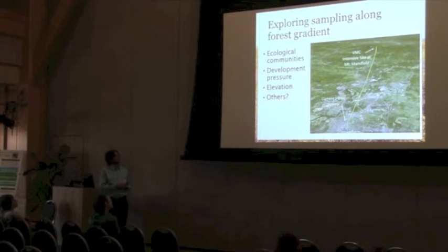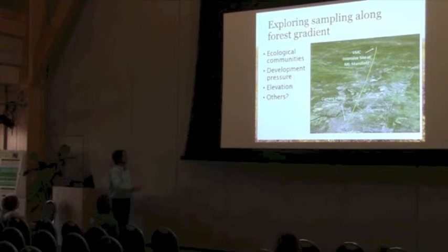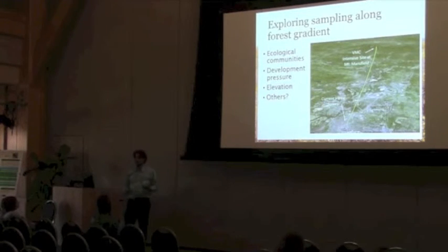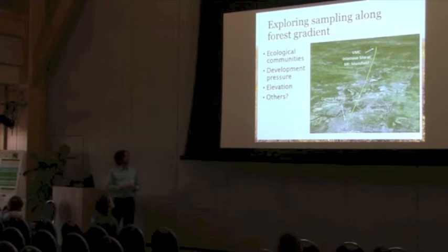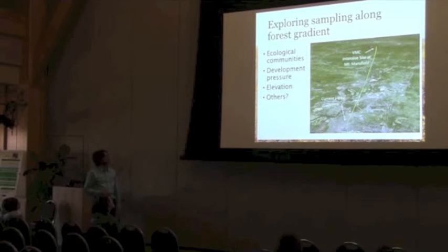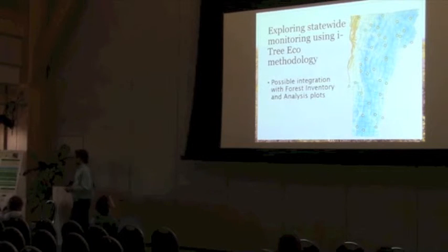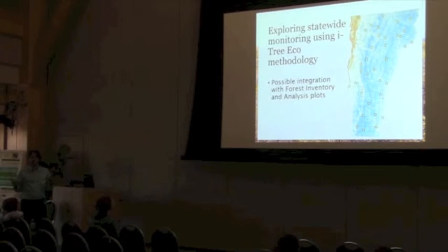We're looking at maybe doing a forest gradient study — Mike Snyder mentioned something about that this morning. What does the continuum along our forest communities look like, or along development pressures? Elevation is kind of a proxy for that. We're looking at our VMC intensive site up at Mount Mansfield, where we have a lot of ongoing research, and we've already done Burlington. Maybe there's something in between we can start to look at — an area of wildly varying development pressure. The other piece is whether we can do some statewide integration with FIA and use this for a larger statewide forest monitoring effort.